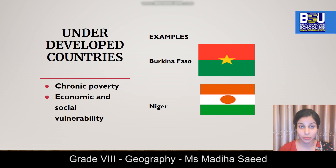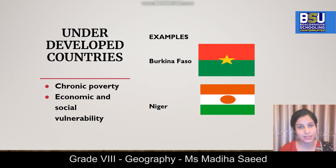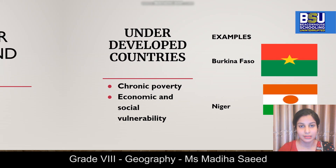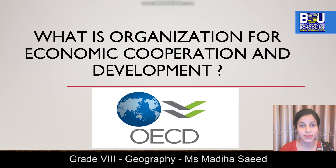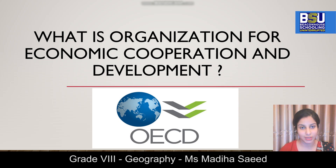So now you know there are four categories depending upon the developmental situation: advanced, in transition, developing, and least developed. The next question is whether there is any international organization that tries to bridge the gap between rich and poor countries. The answer is yes, and that organization is known as the Organization for Economic Cooperation and Development — OECD.